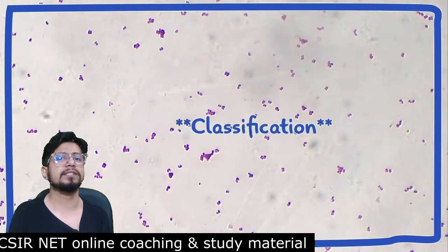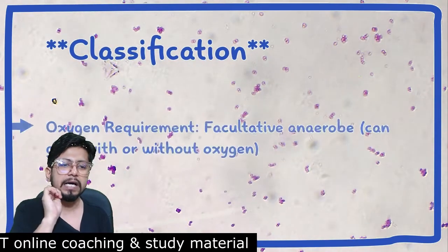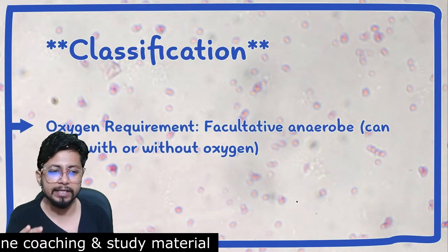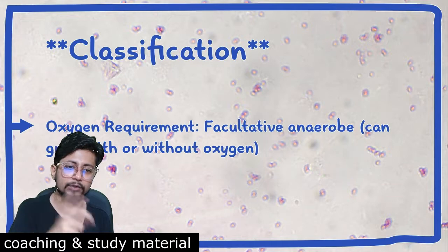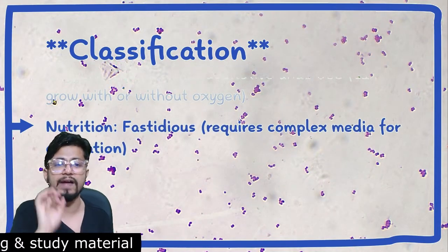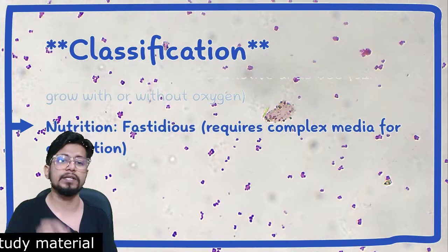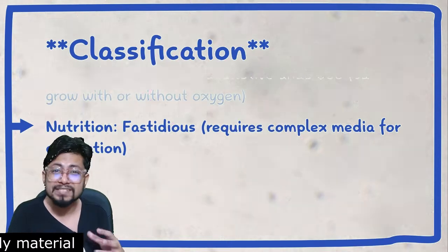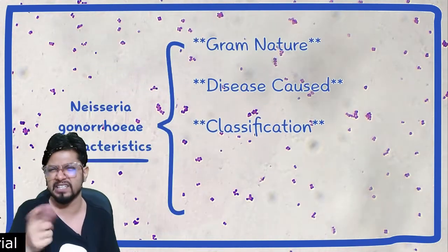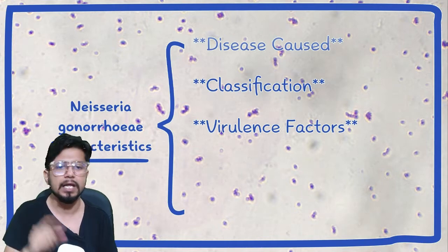What are the classifications? First of all, based on oxygen requirement, Neisseria gonorrhoeae is facultative anaerobic, meaning it can grow with or without oxygen. Based on nutrition, it is fastidious in nature, which means it requires complex media for cultivation and growth. That's why it is a little difficult to culture in the lab as well.